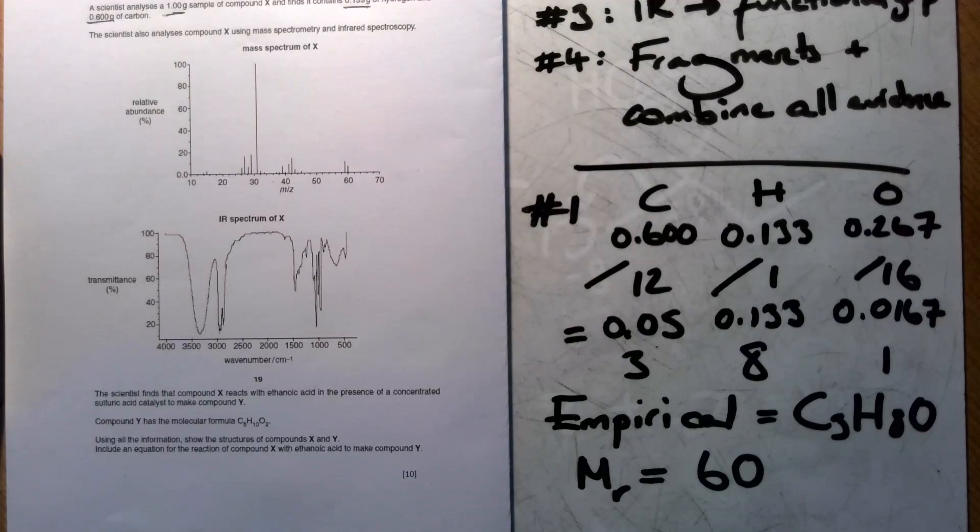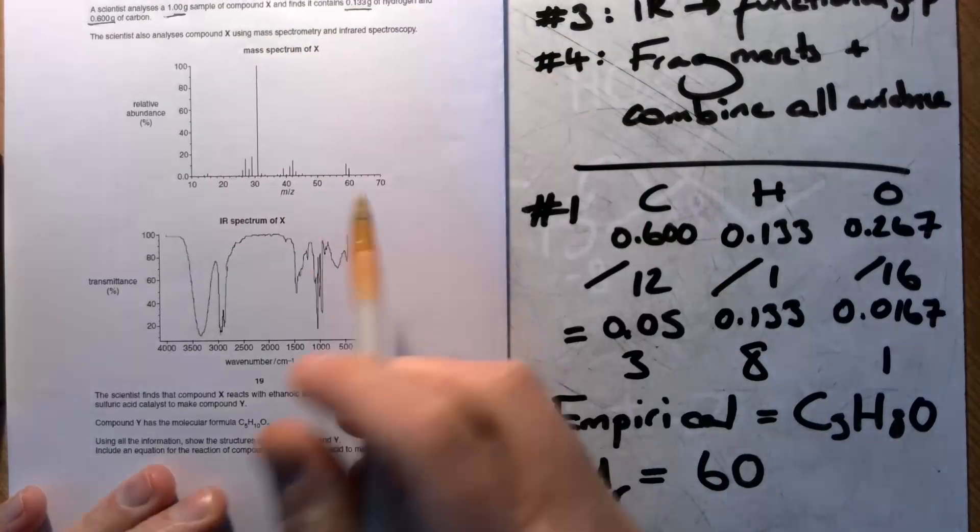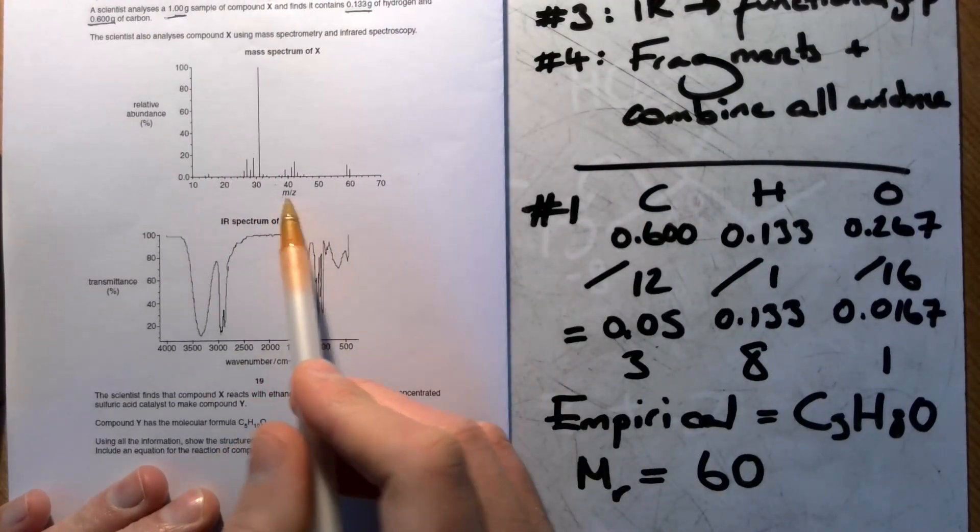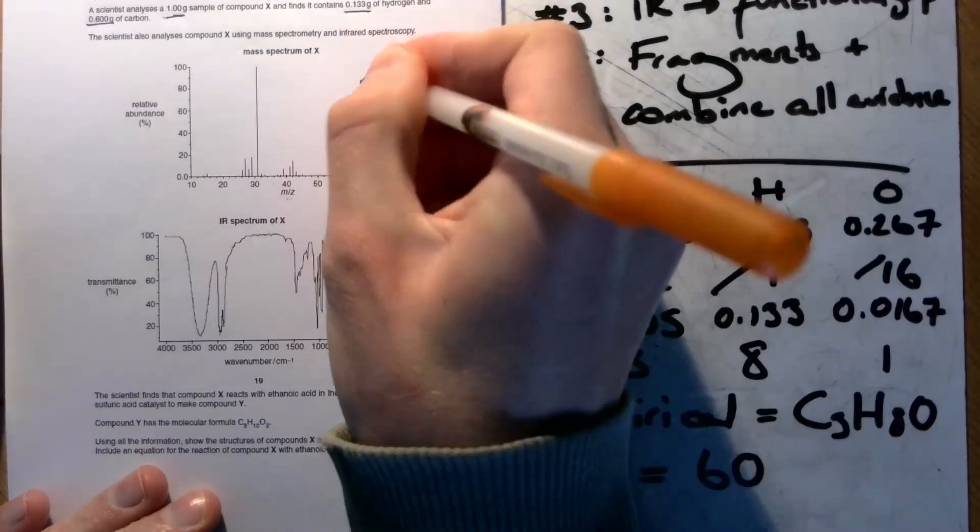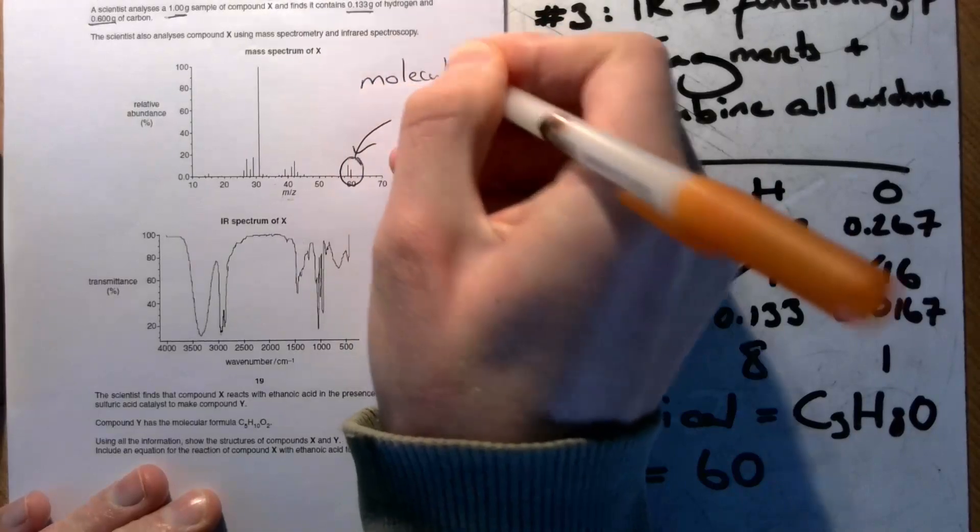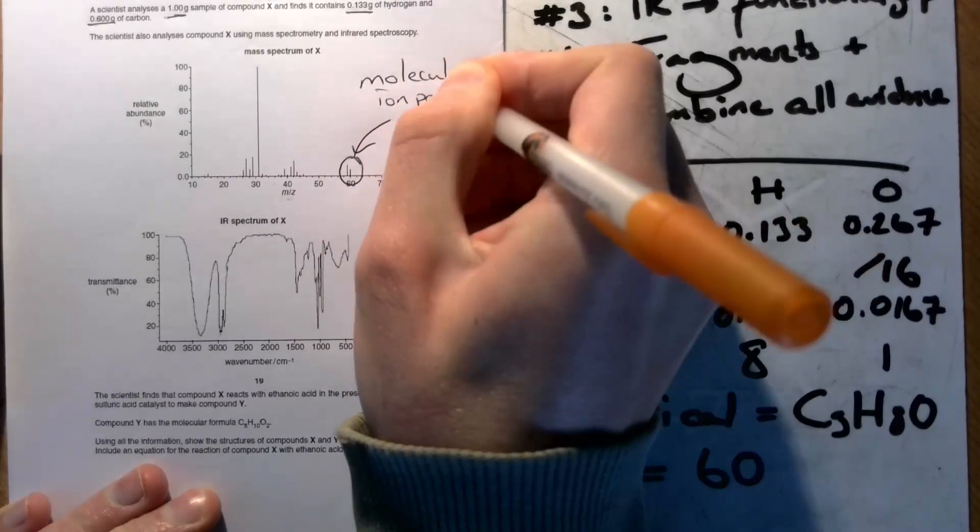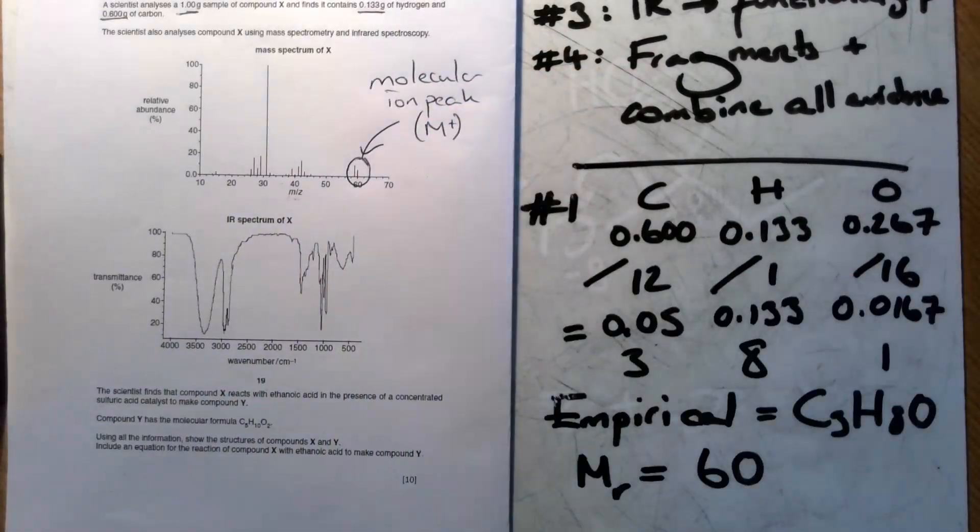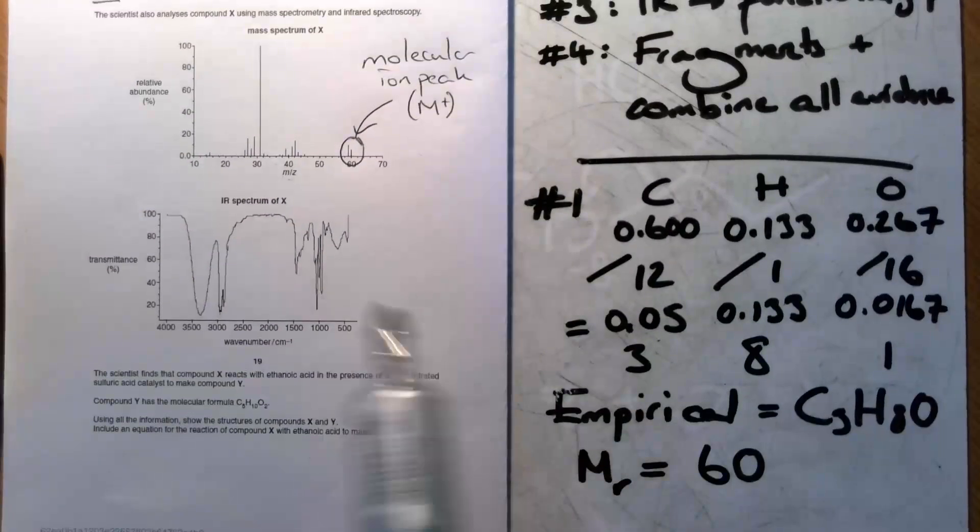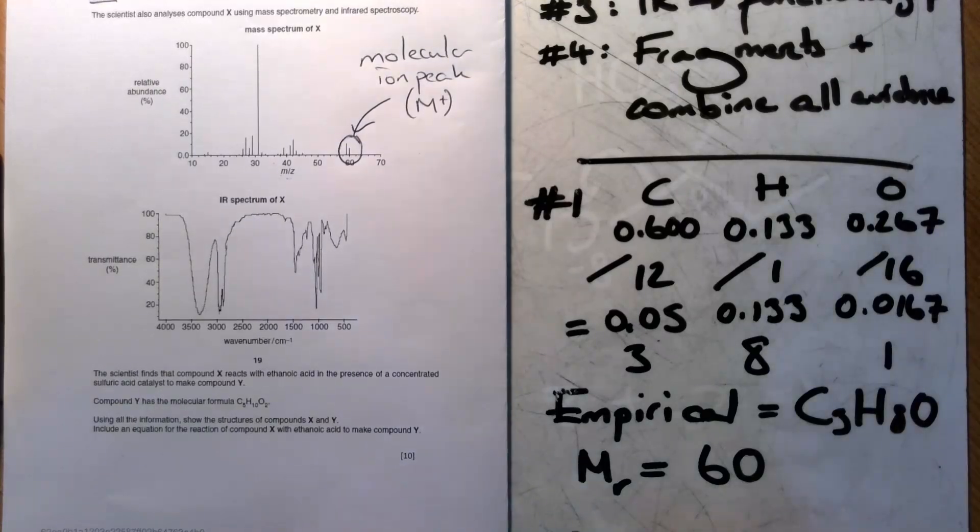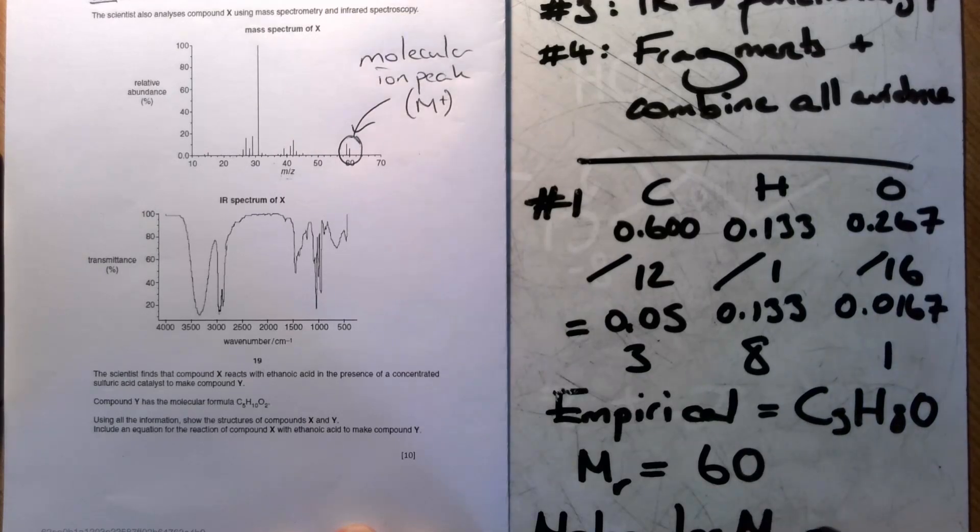We're going to work out the molecular formula by looking at the mass spectrum. The peak highest up the M over Z scale we can see is 60. So that is our molecular ion peak, sometimes called M plus. So what that tells us is that if the molecular ion, the molecule has a mass of 60, then it must have the same formula as the empirical formula.